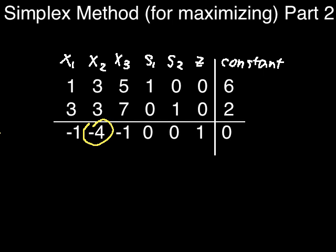Whichever value gives you the smallest positive quotient, it can't be 0, is the pivot point. If you get more than one of the same positive quotient, choose the one higher up.